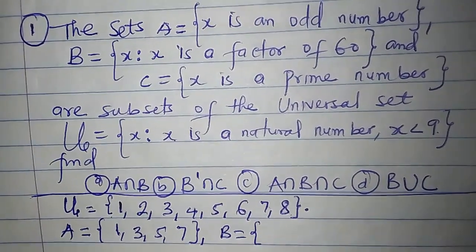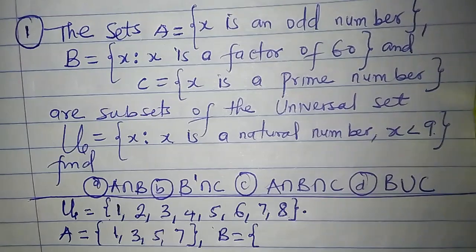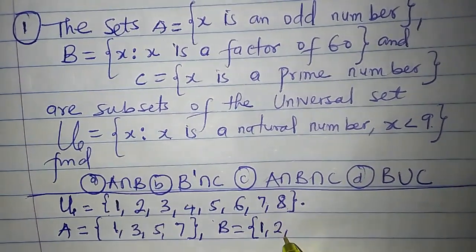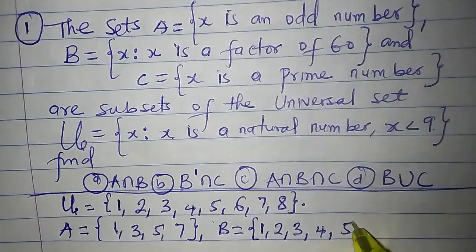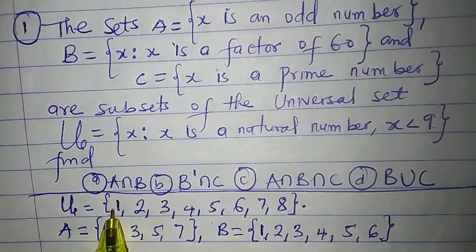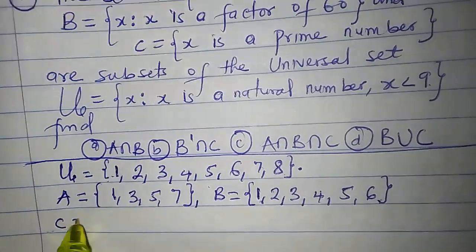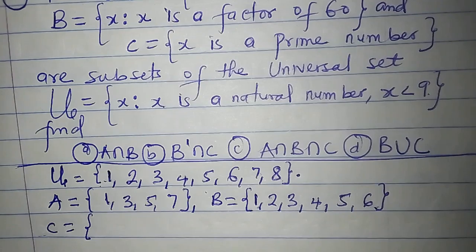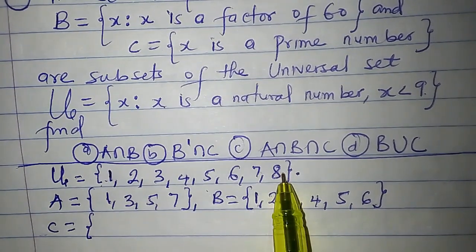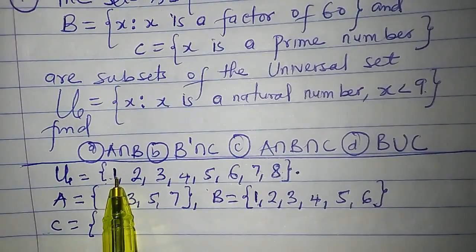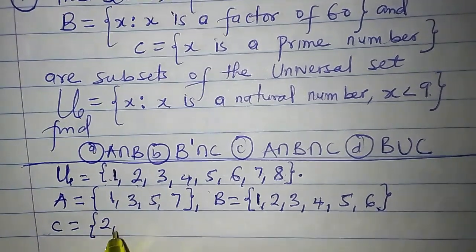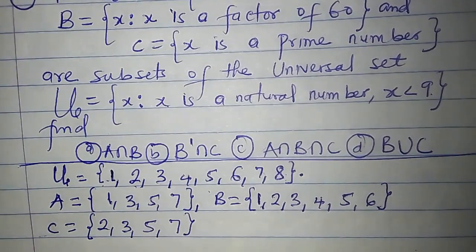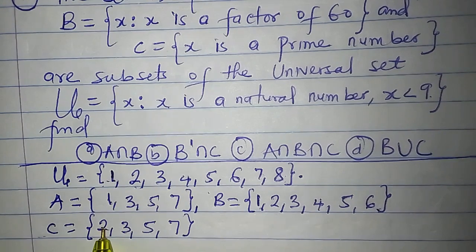Set B says X is a factor of 60. So what are the factors of 60 in this universal set? Factors of 60 include 1, 2, 3, 4, 5, and 6. Set C says X is a prime number. Prime numbers are numbers that can be divided by themselves and 1 only. The prime numbers in this universal set are 2, 3, 5, and 7. Note that 1 is not a prime. Prime numbers only have 2 factors — the number itself and 1.